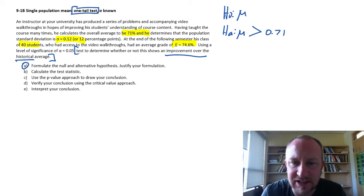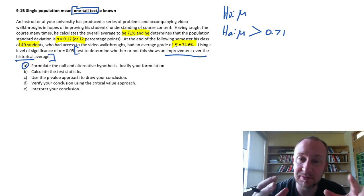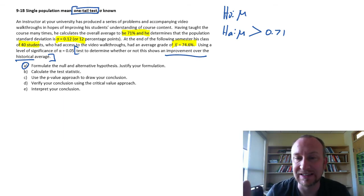That's going to be reflected in my alternative hypothesis: mu greater than 0.71, so 71 percent. This is the purpose of the research, why we're doing this exercise. I want to be able to show has the mean gone above, is it greater than 0.71.